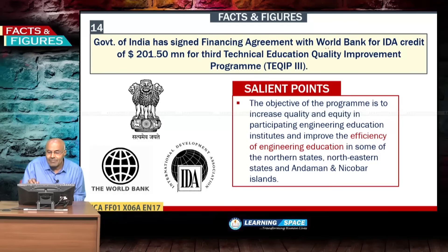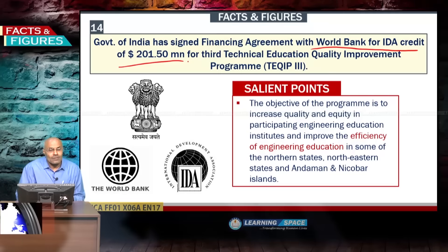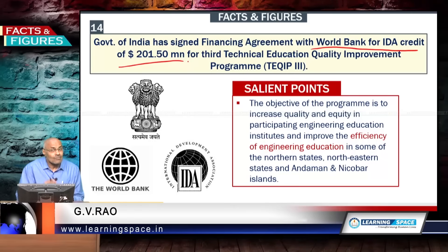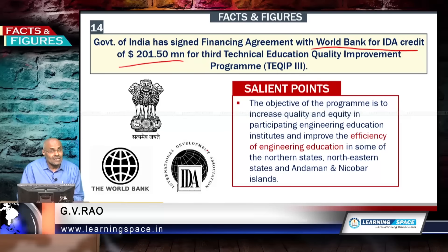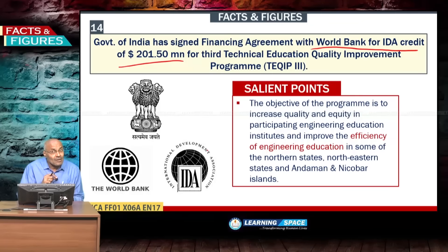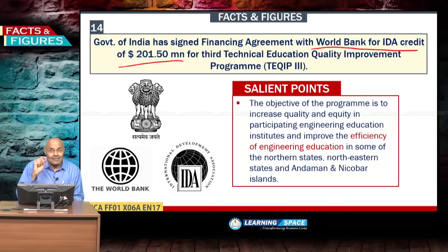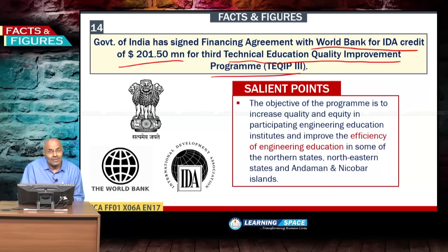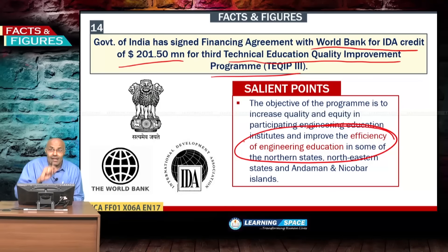The Government of India signed a financing agreement with the World Bank for an IDA credit of $201.50 million. The International Development Association (IDA), established in 1960, is part of the World Bank and focuses on the poorest countries. This credit of $201.50 million will be used for the Technical Education Quality Improvement Program to improve engineering education in North and North-Eastern states and the Andaman and Nicobar Islands.